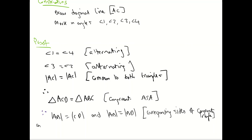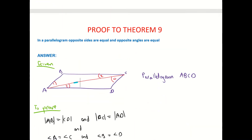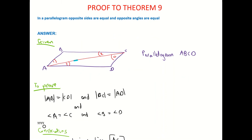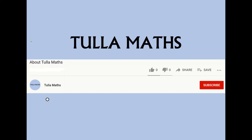And I can also now look at the angles: angle A is equal to angle C, and angle B is equal to angle D, because they are the corresponding angles within those congruent triangles. So that's our proof — it's all to do with congruent triangles. Thank you for watching another tutorial video from Tullamaths. Make sure and subscribe.